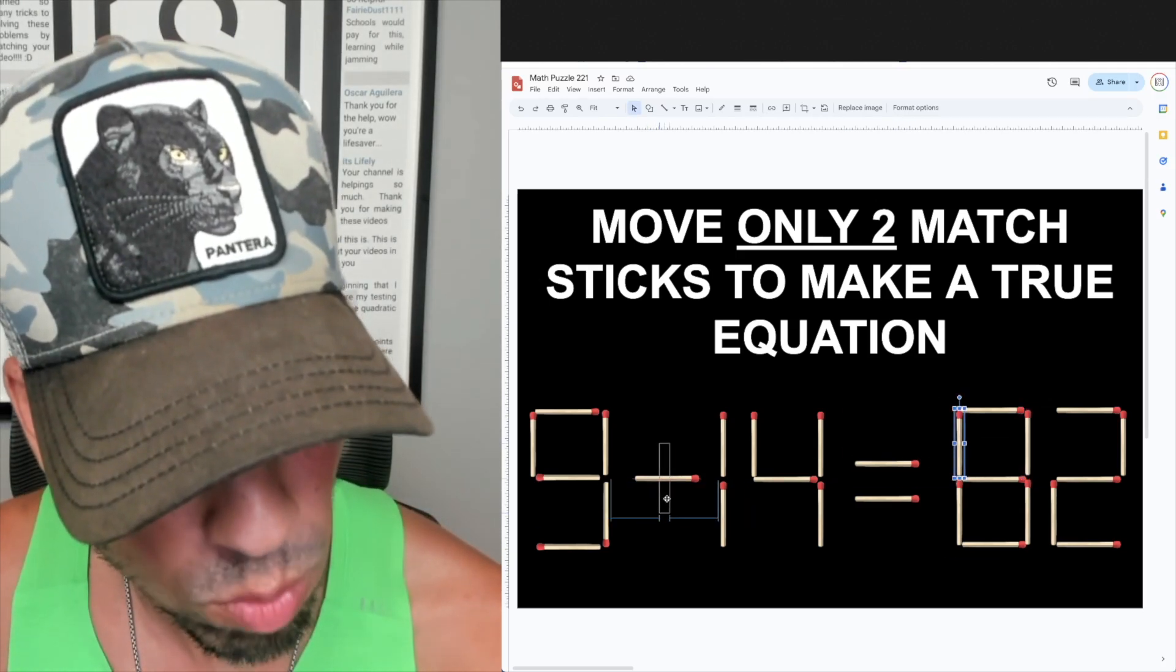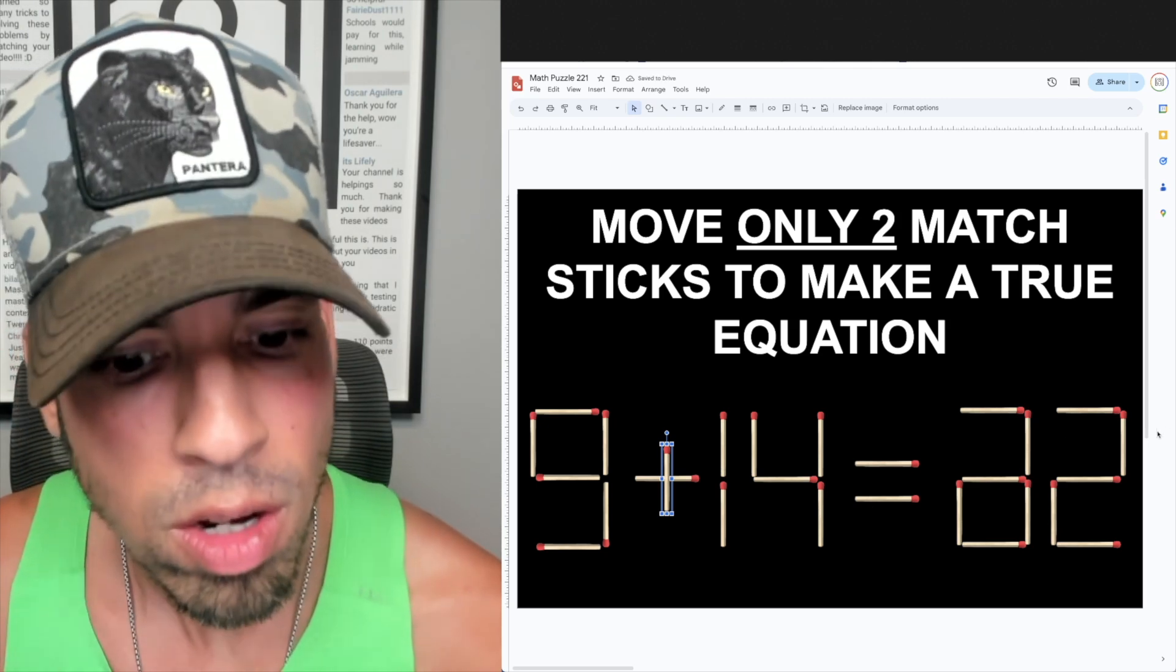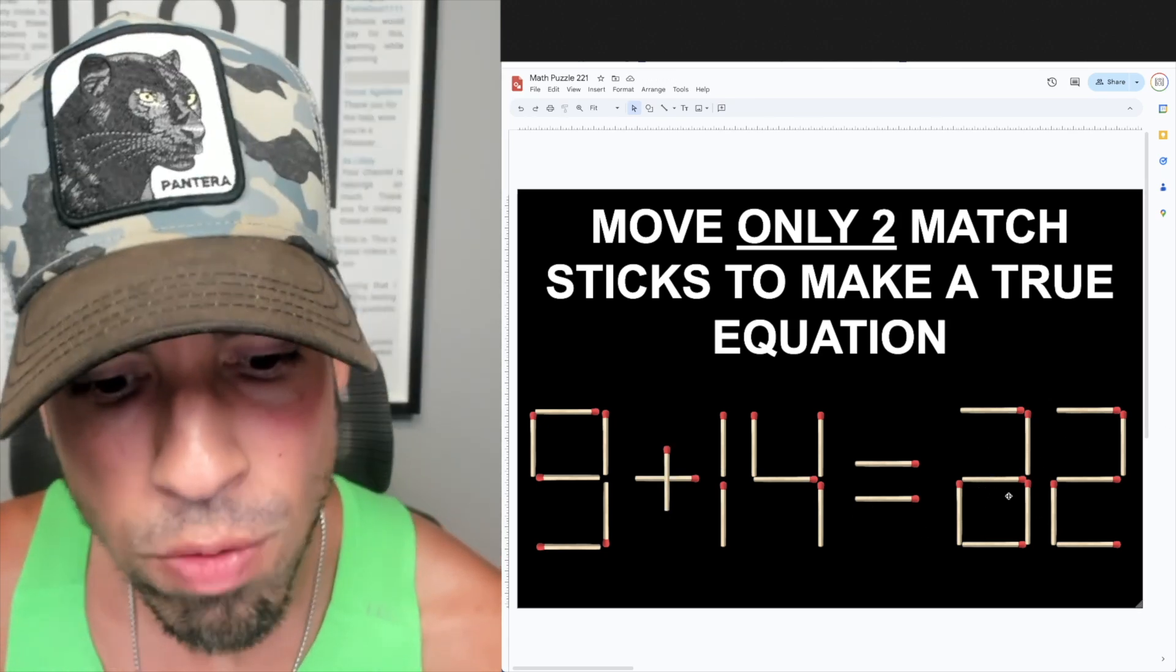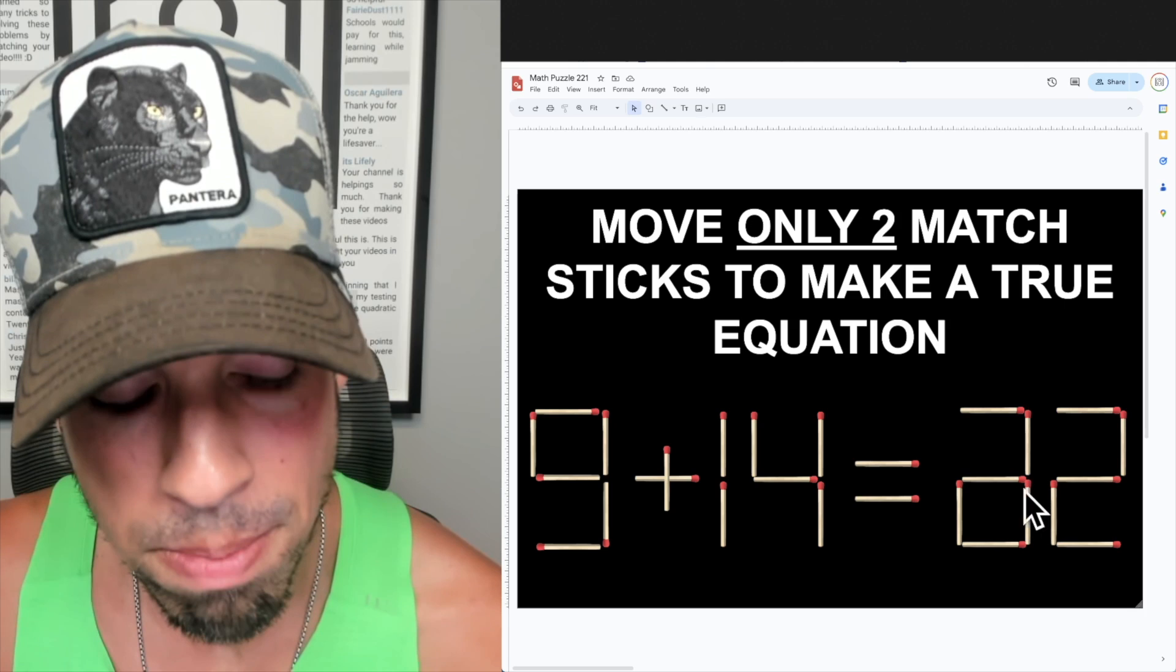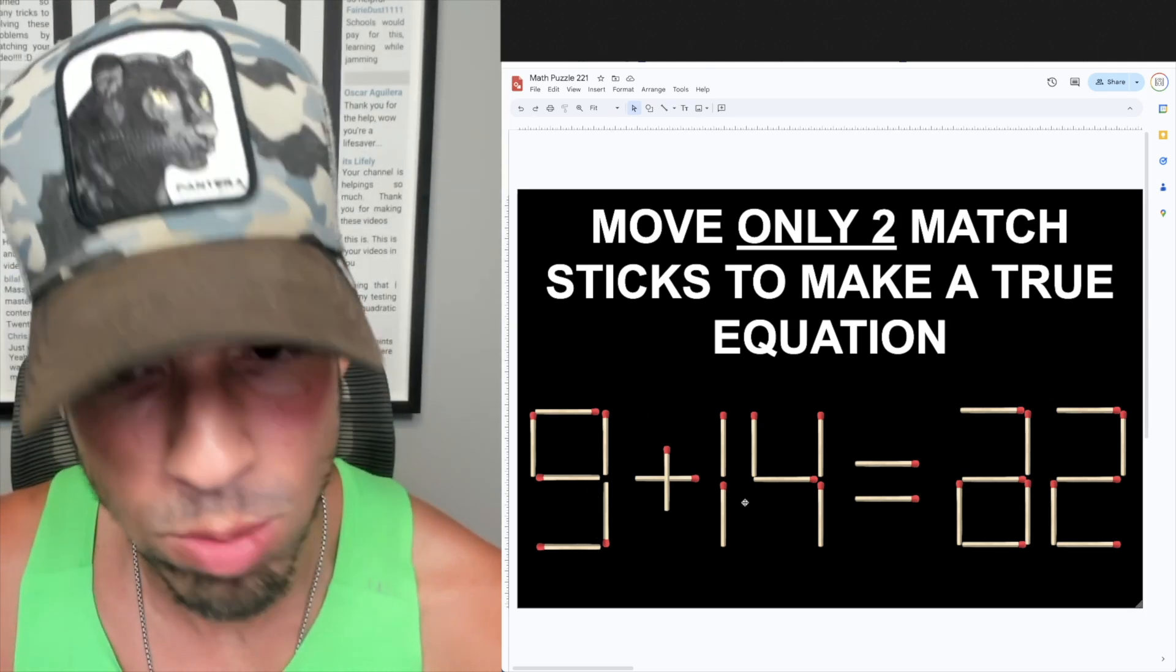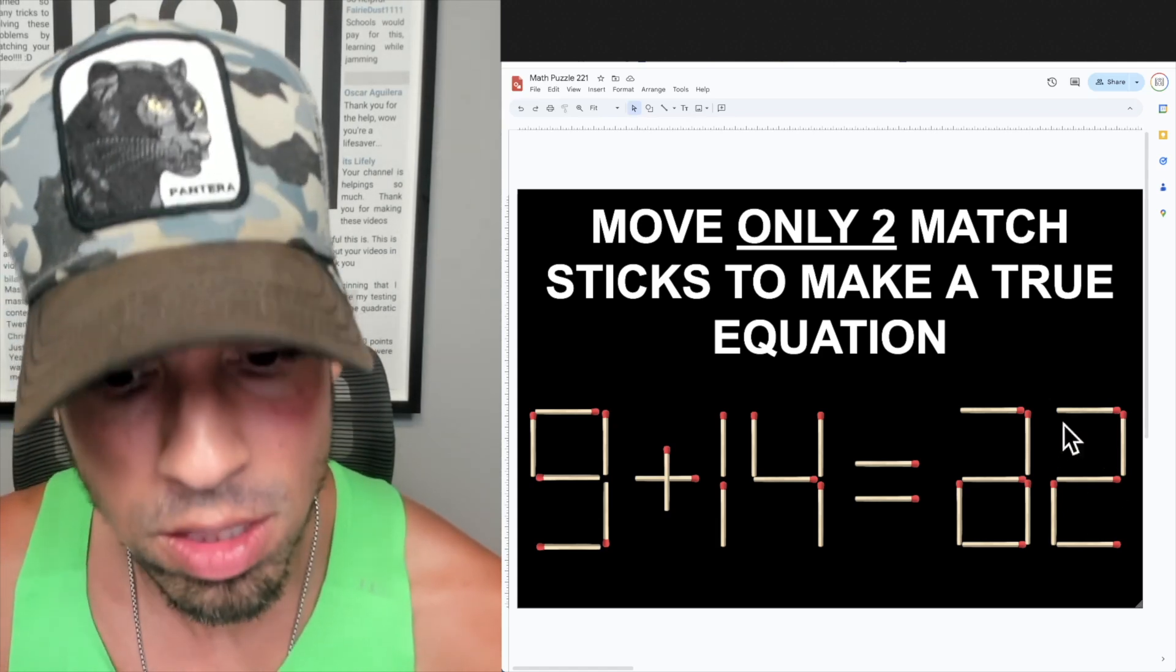So now we have 9 plus 14, which is equal to some number. Like, this is still not a legitimate number. So if we're going to go forward with this, we need to modify this to make it a legit number and then maybe make one more modification on the left side, because right now we have 9 plus 14, which we know is 23, and this is not 23.